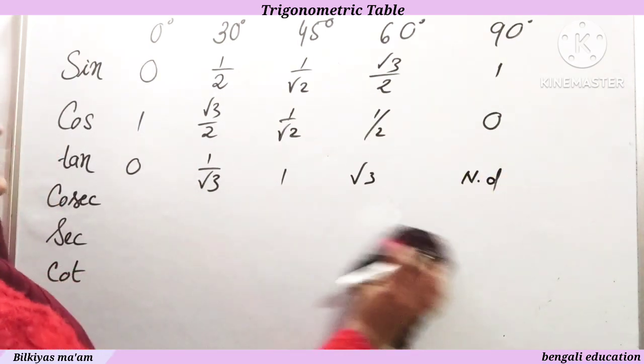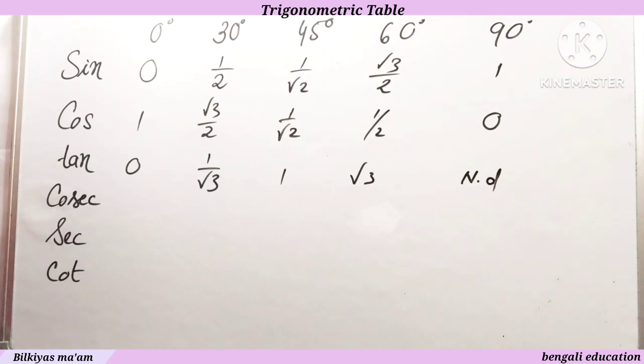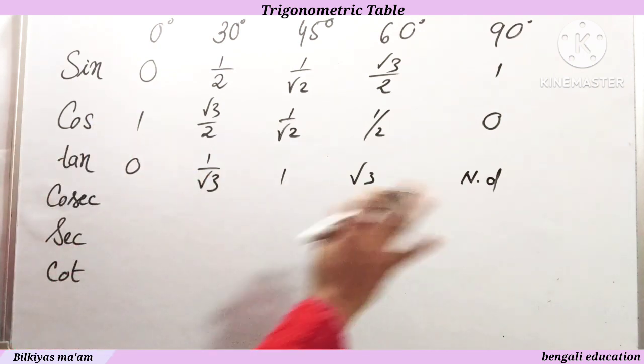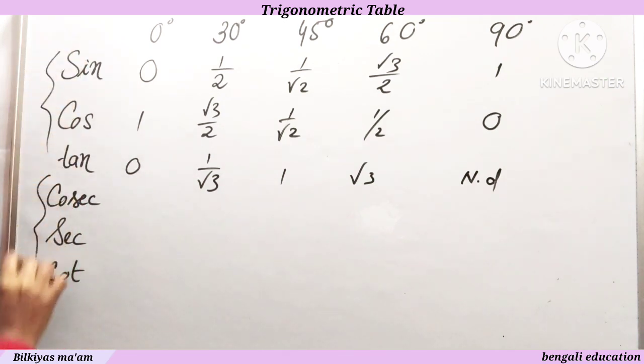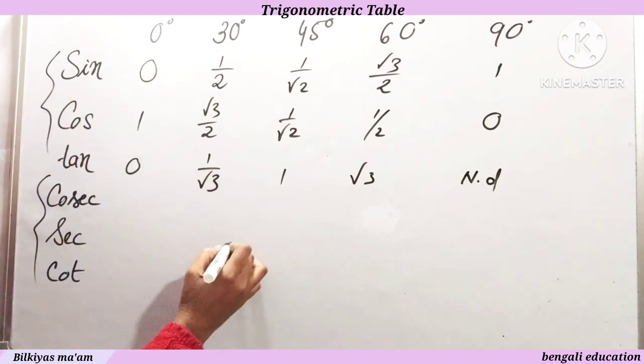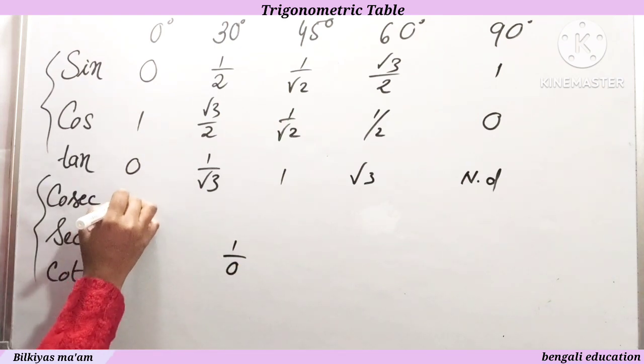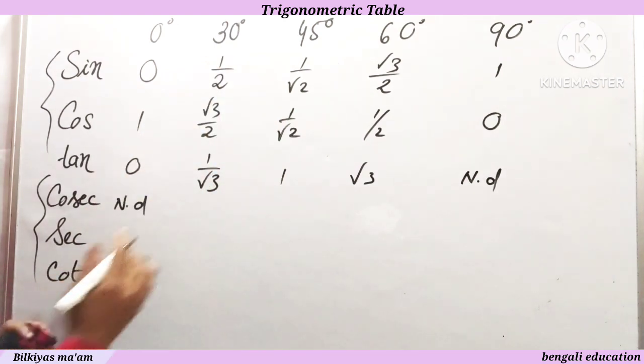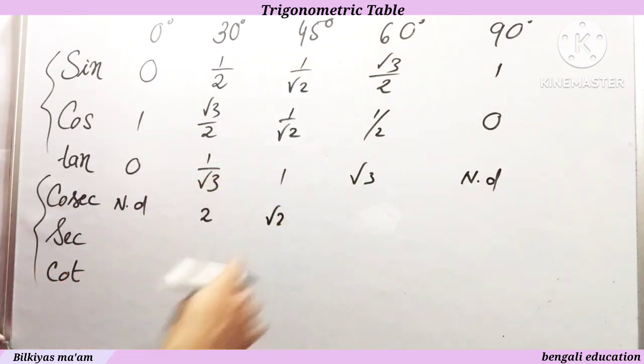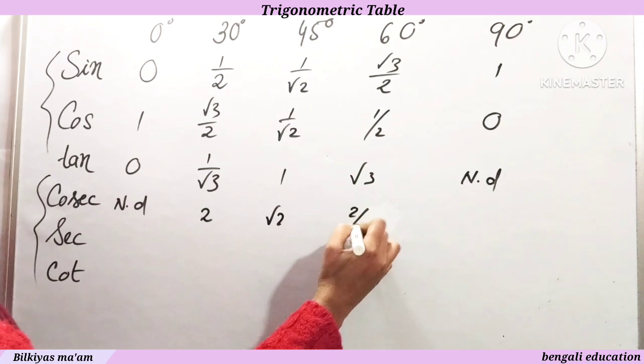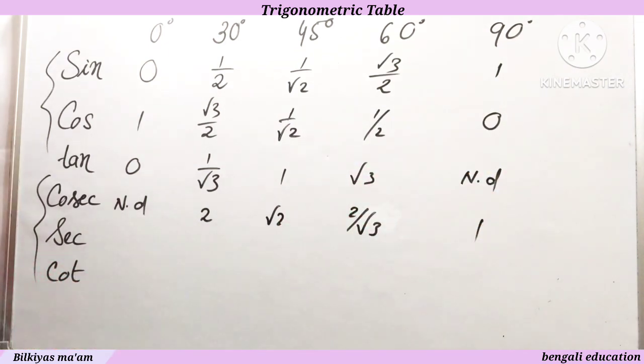Cosec is the reciprocal of sin. Cosec 0 is 1 upon 0, which is not defined. Then 1 upon half is 2, 1 upon 1 upon root 2 is root 2, 1 upon root 3 by 2 is 2 upon root 3, and 1 upon 1 is 1. So you can see not defined, 2, root 2, 2 upon root 3, and 1.